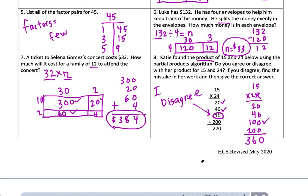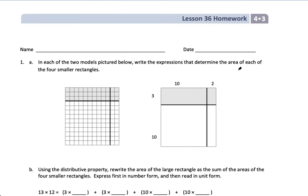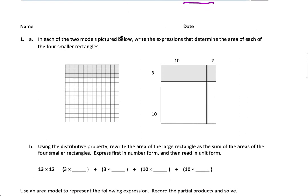Page 2 comes from lesson 36 in Zearn, mission 3 — some of you are getting close to that lesson. Number 1: two area models are pictured that represent the same thing — one with a grid and one without. You can count the units: this side is 10 units and 2 units, that's 12; the other side is 10 units and 3 units, that's 13. So the model represents 12 times 13.